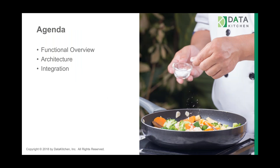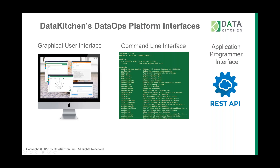Those are the pieces from a functional standpoint: recipes, kitchens, orders, and ingredients. So what's our architecture? It's a modern architecture. We have a UI where you can do basically anything — manage recipes, run them, see results, create kitchens. We have a command-line interface where you can pull the recipe to your file system, edit it, push changes, run recipes, and see results. Both the GUI and the CLI use a REST API that you can program against, so you can script our system like any other.